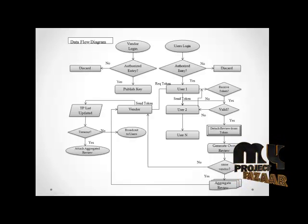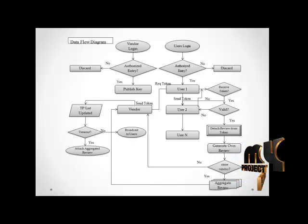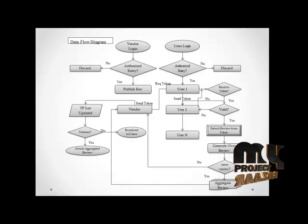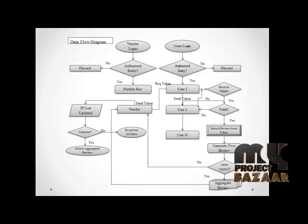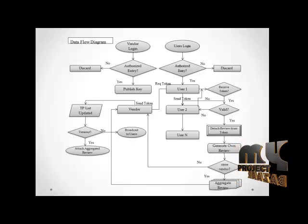After he gets the requested token, he will validate the received token with the help of the previously received public key. If those tokens get validated, he can generate his own review and those generated reviews can be attached with the generated token and sent to the vendor, so that the vendor can update his TP list which is maintained about the users, every user and his corresponding tokens, and those tokens can be validated with the help of the timestamp.